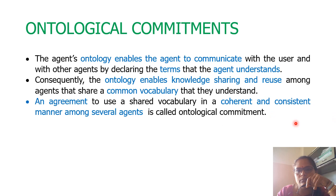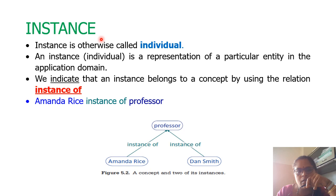The next concept is instance. What is an instance? It is simply an individual — a representation of a particular entity in the application domain. For example, we are looking at two persons called Amanda Rice and Gansmill. Both of them are individuals called proposers. You can consider these individuals as instances of a general concept called proposers. We indicate that an instance belongs to a concept by using the relationship 'instance of'.